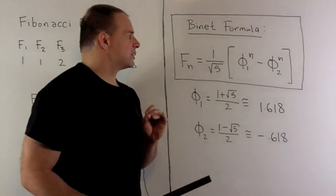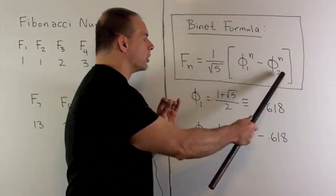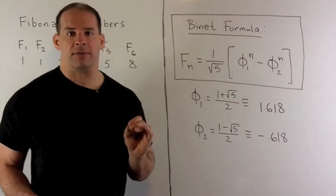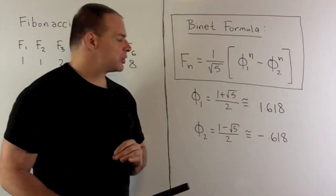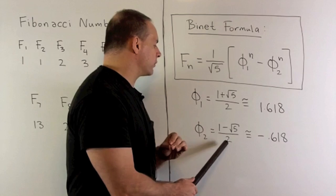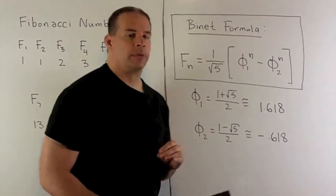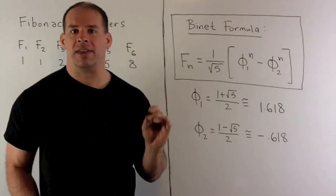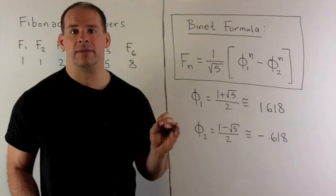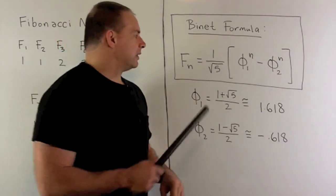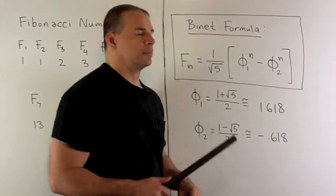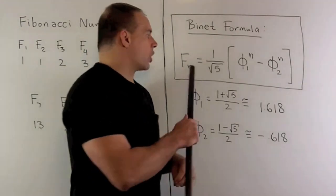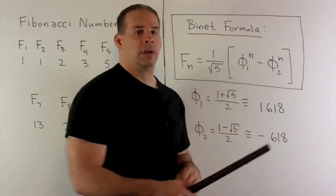The Binet formula uses two numbers. The first number is going to be the golden mean: 1 plus square root of 5 over 2. The second number is going to be 1 minus square root of 5 over 2. I raise both to the nth power, take the difference, and then divide by square root of 5. That gives me the nth Fibonacci number. So that seems pretty unlikely, but this is always going to be an integer.